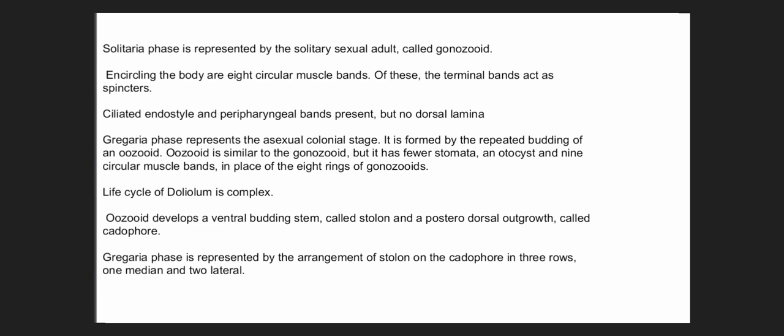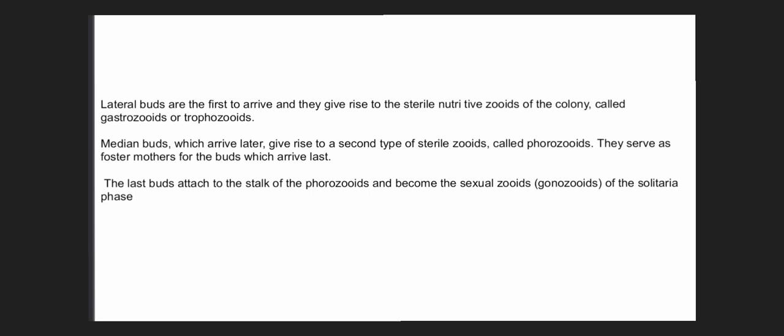The life cycle of Doliolum is complex. The oozooid develops a ventral budding stem called the stollen and a posterior dorsal outgrowth called the cadophore. The gregaria phase is represented by the arrangement of buds on the cadophore in three rows: one median and two lateral. The lateral buds are the first to arrive and they give rise to sterile nutritive zooids of the colony called gastrozooids. Median buds give rise to another sterile zooid called phorozooid, and the last buds attach to the stalk of the phorozooid and become the sexual zooids of the solitary phase.